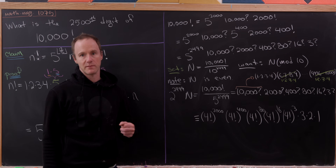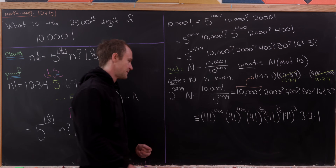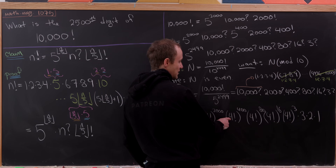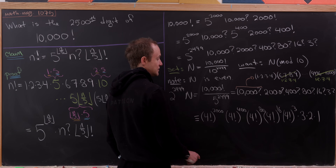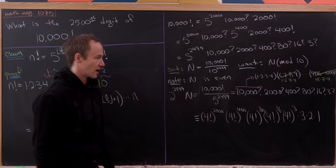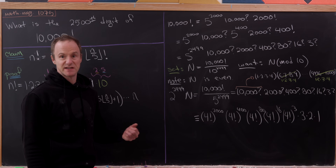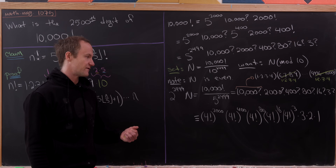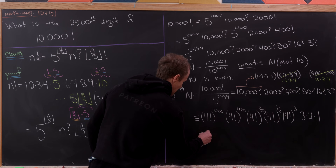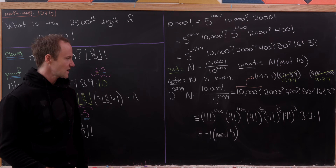Now, 4! = 24 ≡ -1 mod 5 (by Wilson's theorem or direct calculation). So the product becomes (-1)^2000 × (-1)^400 × (-1)^80 × (-1)^16 × (-1)^3 × (3×2×1). The first four are all 1 (even exponents), the fifth is -1 (odd exponent), and 3×2 = 6 ≡ 1 mod 5. Taking the entire product gives -1 mod 5. So 2^2499 × N ≡ -1 mod 5.